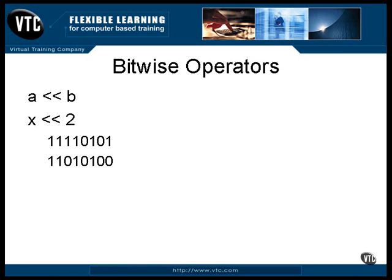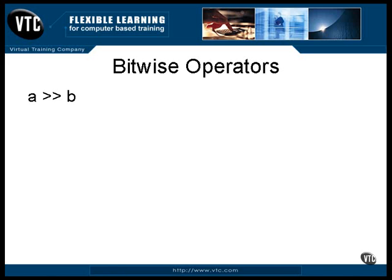There is also a shift to the right. The bits in the variable a are shifted to the right by the number of positions specified by the expression b. For example, to shift x two positions to the right, you do this. Now this is a signed shift — that is, if you shift a negative number it will remain negative. The bit on the left is duplicated to fill the new spots being created.